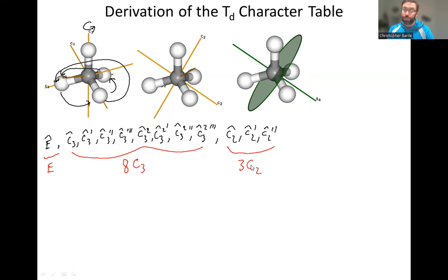We also have an S4 that we can use, and these are coincident with the C2s. So we're going to have three of these S4s. Remember an S4 is a C4 followed by a horizontal mirror plane, so sigma H. So we can call these S4, S4 prime, and S4 double prime.